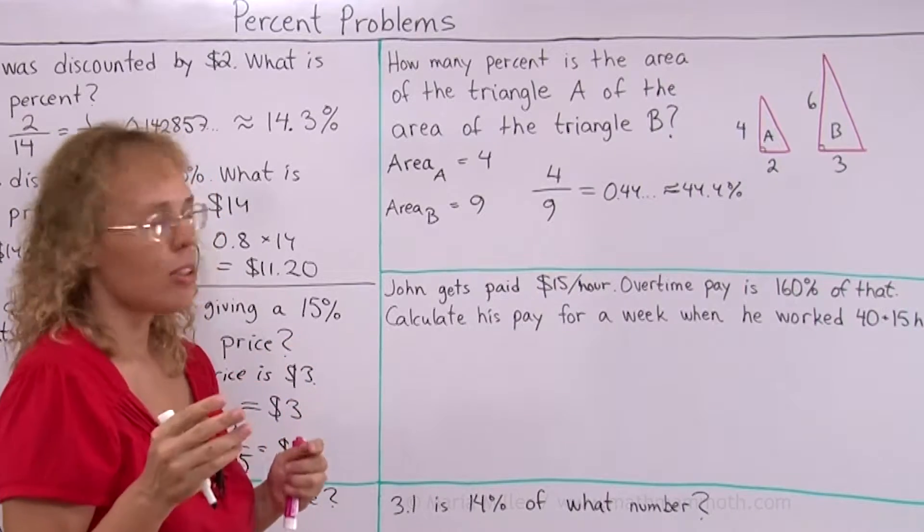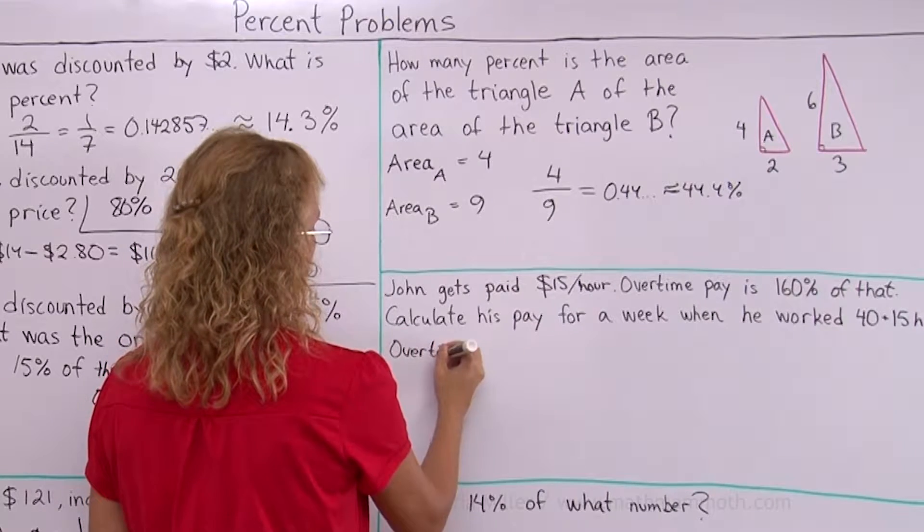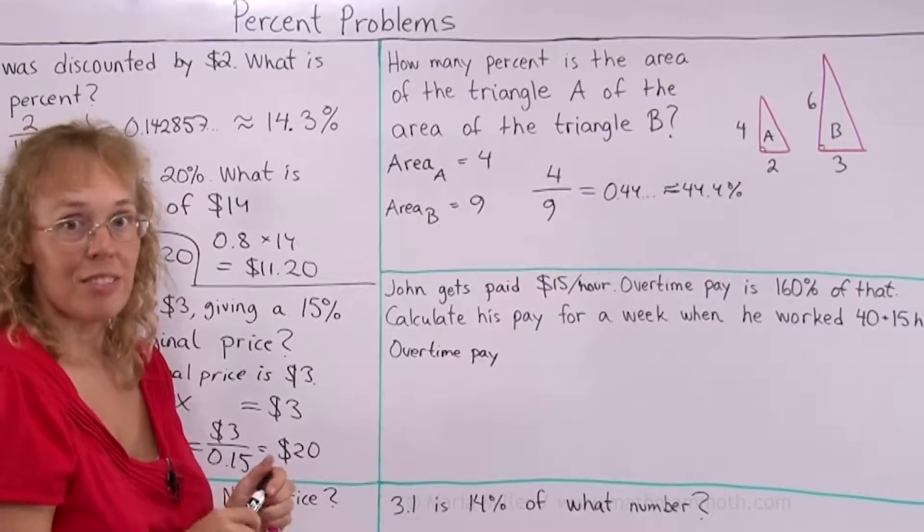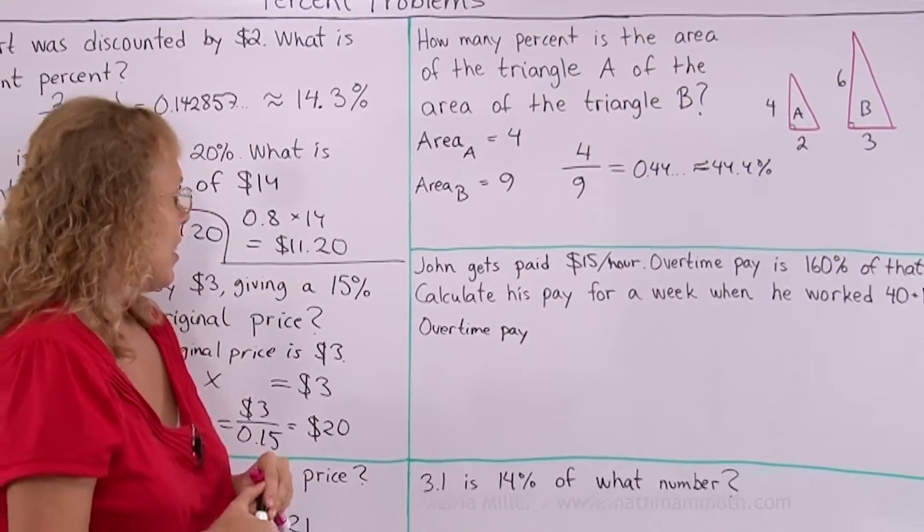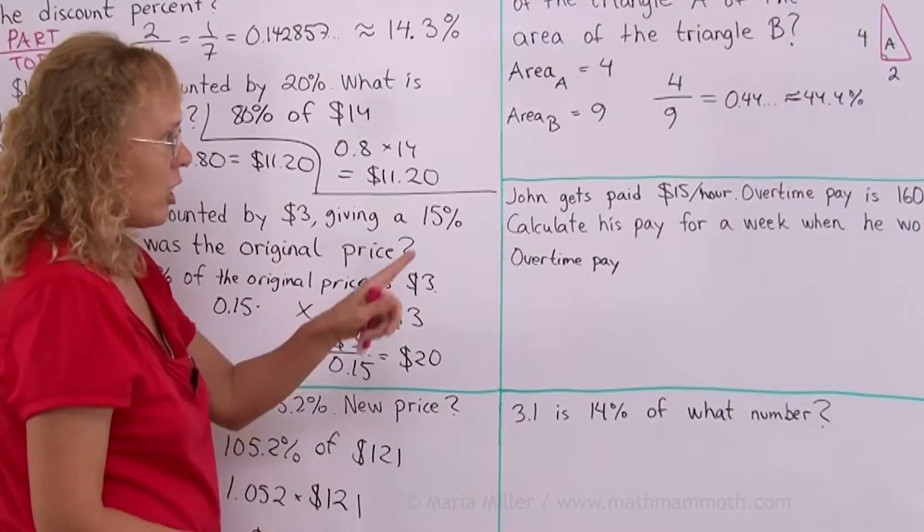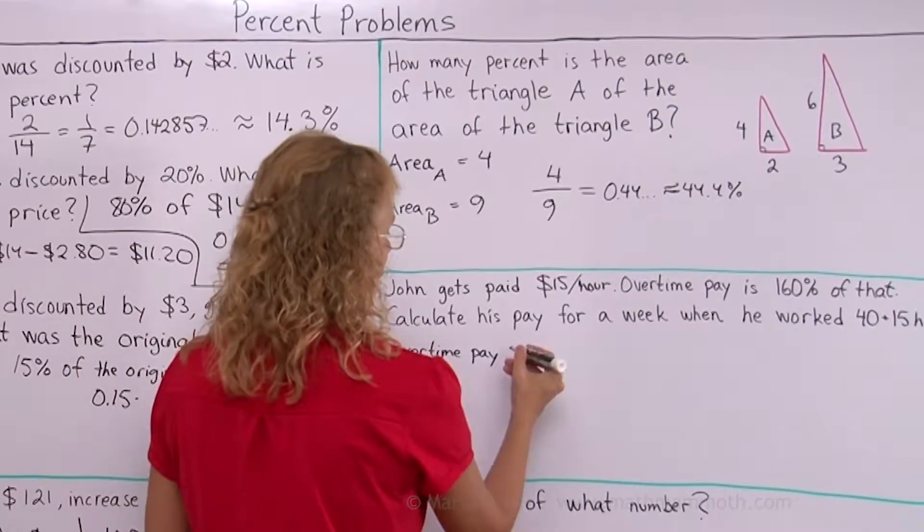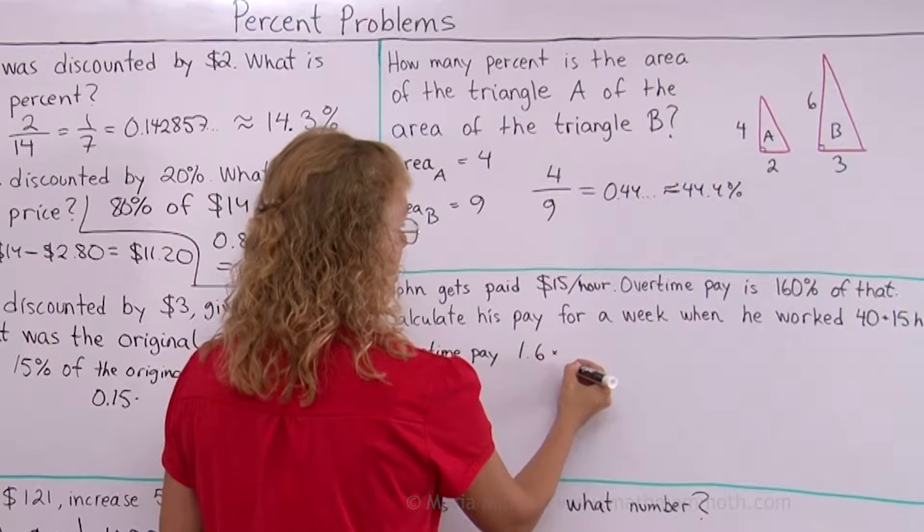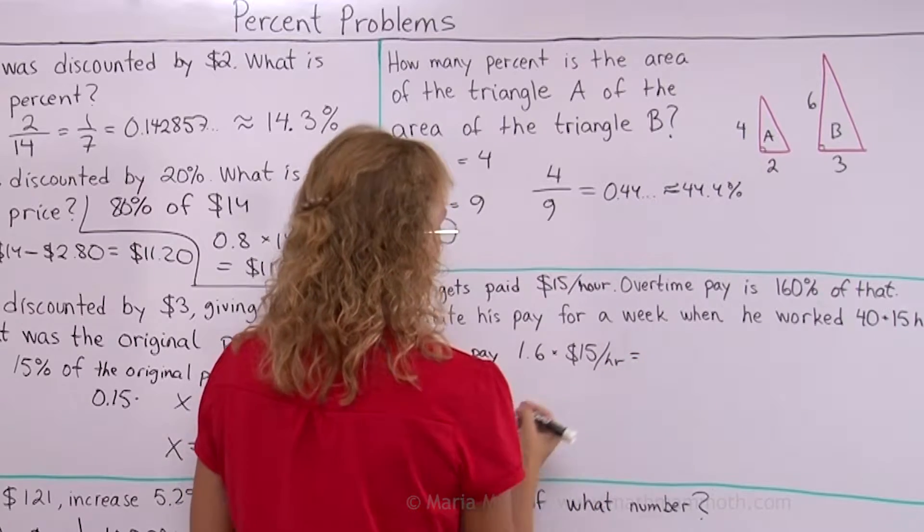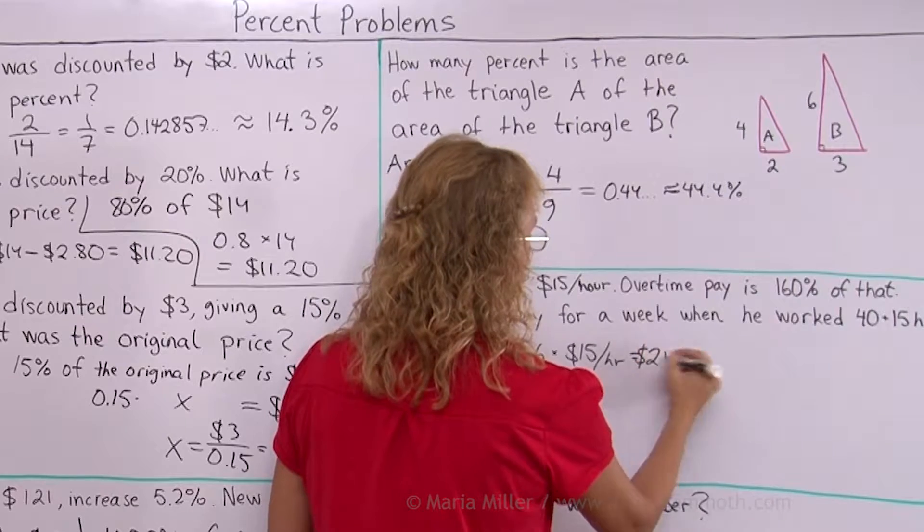Okay, just a few ways you can go about this. Let's first calculate the overtime pay per hour. It is 160% of 15, right? Just like here, a percentage of a number. So I'll change this 160% into a decimal. It will be 1.6 times 15 dollars per hour. And this, you can use a calculator again, it is 24, 24 dollars per hour.